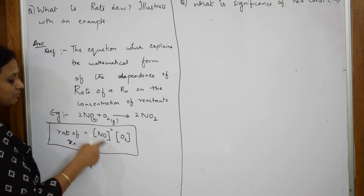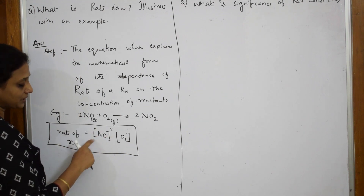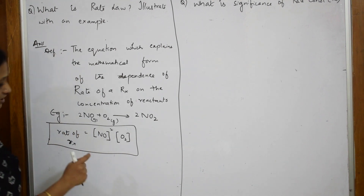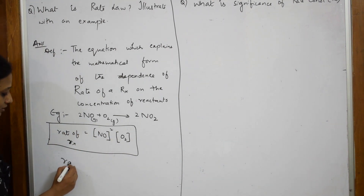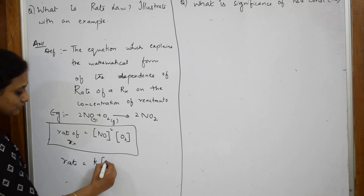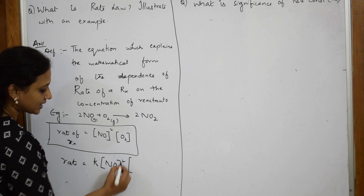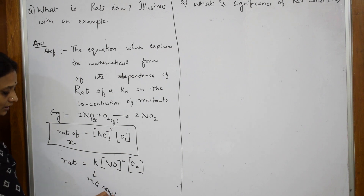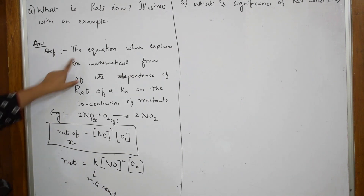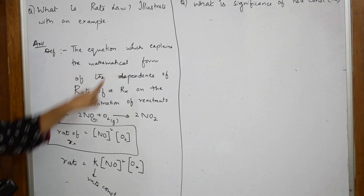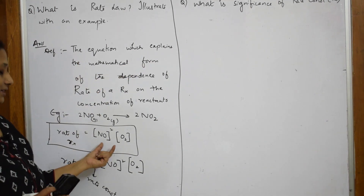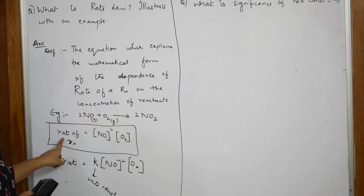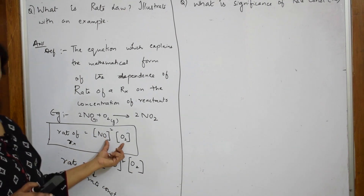Along with the rate of the reaction expressed in terms of concentration, I am going to use one more term: rate = k × [concentration of reactant raised to its power]. Here k is called the rate constant. This is the equation which explains the mathematical form of the dependence of the rate of a reaction on the concentration of the reactants.